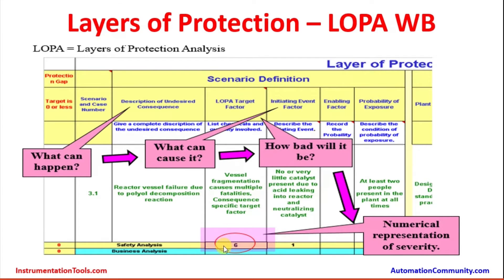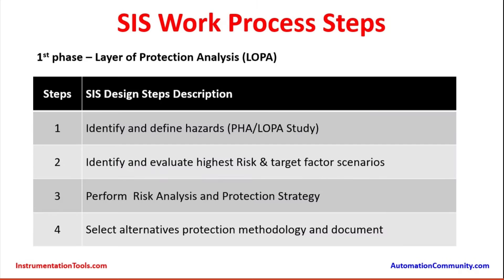All those protection layers will be credited, each contributing to eliminating the hazard, so that the target factor is achieved. Each scenario will have some credit, and understanding these detailed calculations is part of a detailed technical analysis study. The third step is to perform risk analysis and protection strategy — this is the third step in the LOPA analysis. The fourth step is to select alternative protection methodology and document them. These are the four steps in the first phase.